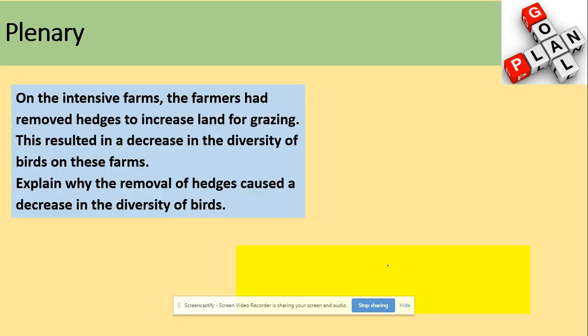And a last question here is to explain why the removal of hedges caused a decrease in biodiversity. So again, model answer: less food sources because they removed species or types of plants or insects. So I hope you've got the good picture of the keywords. And less habitats, less niches would give you a mark for this question as well. Right. See you later.